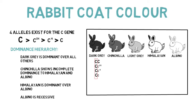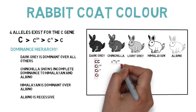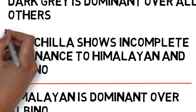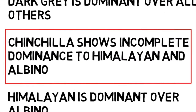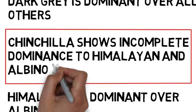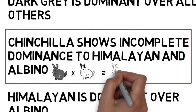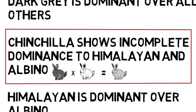Chinchilla rabbits have the genotype lowercase cch, lowercase cch. In order to produce a chinchilla rabbit, there has to be two of the lowercase cch alleles. You also need to remember the chinchilla coat color shows incomplete dominance in regards to Himalayan and albino rabbits. This means when you cross a chinchilla rabbit with a Himalayan rabbit, you get the light gray phenotype. And if you cross a chinchilla rabbit with an albino rabbit, you also get the light gray phenotype.